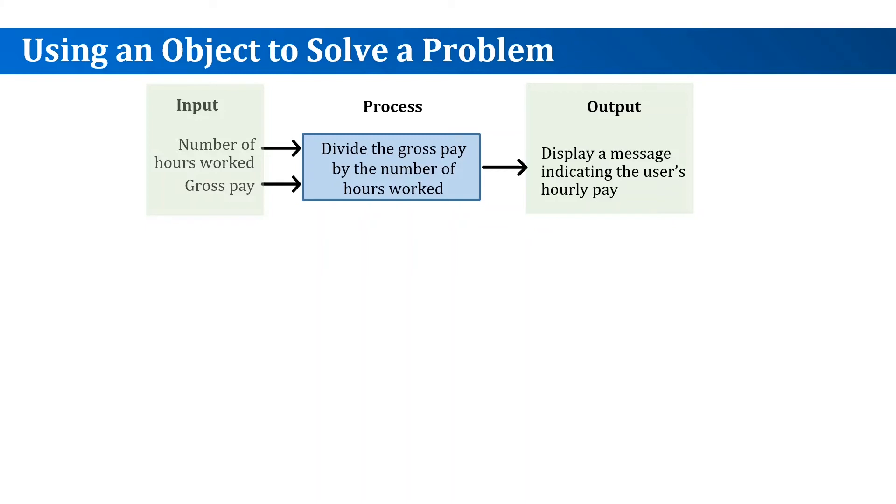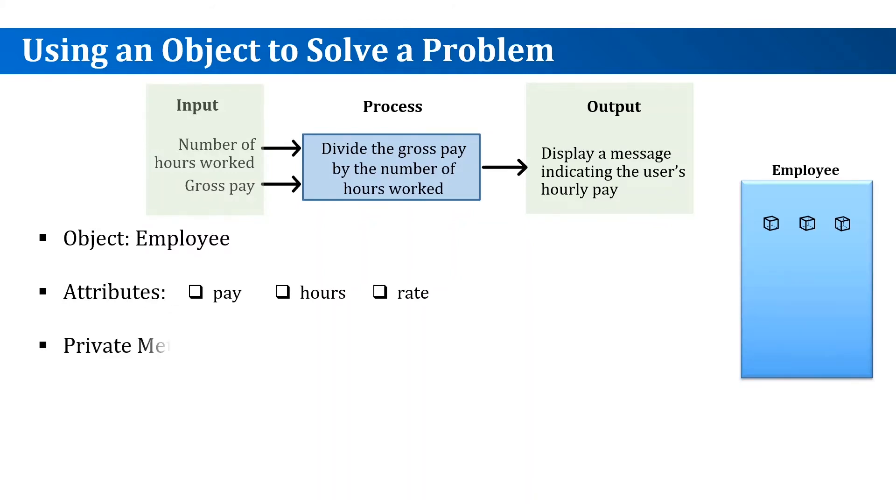One way to think about it is to say that this user could be thought of as an object that we will refer to as an employee. The employee has three attributes: pay, hours, and rate. Of course, you could add more attributes such as name, address, and so on.